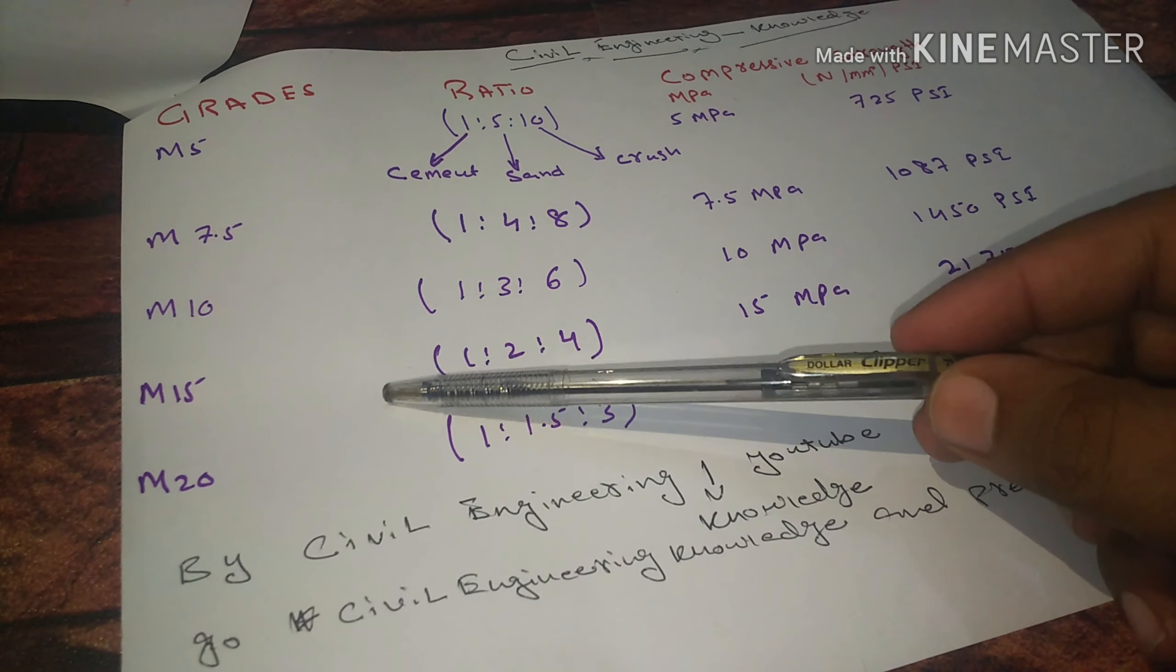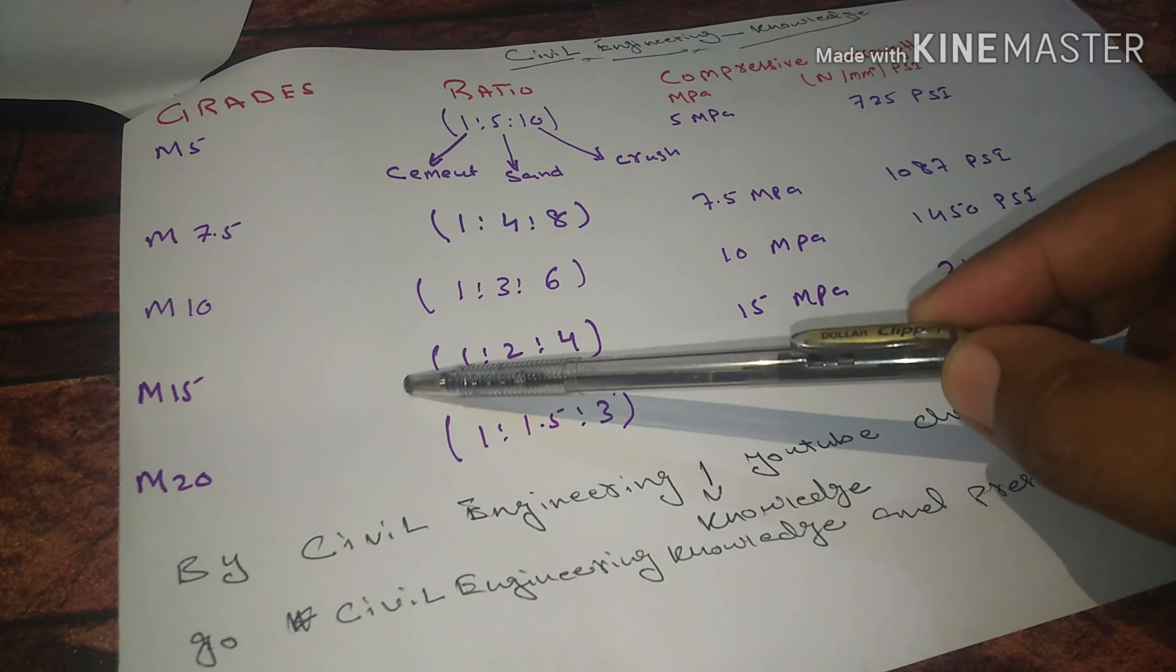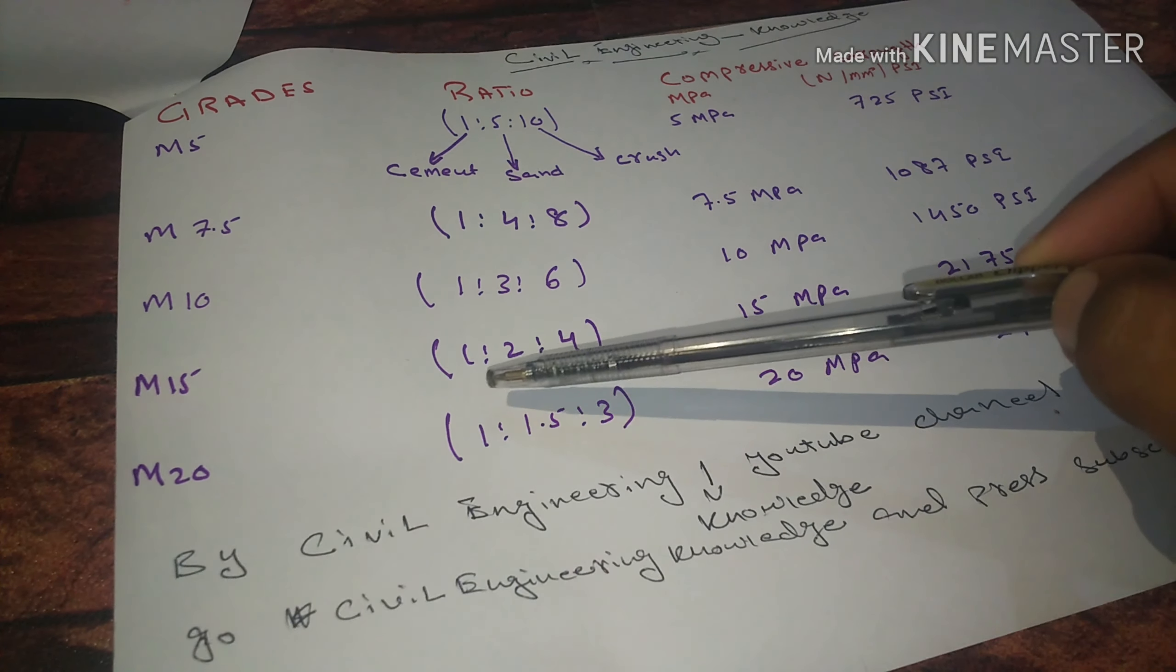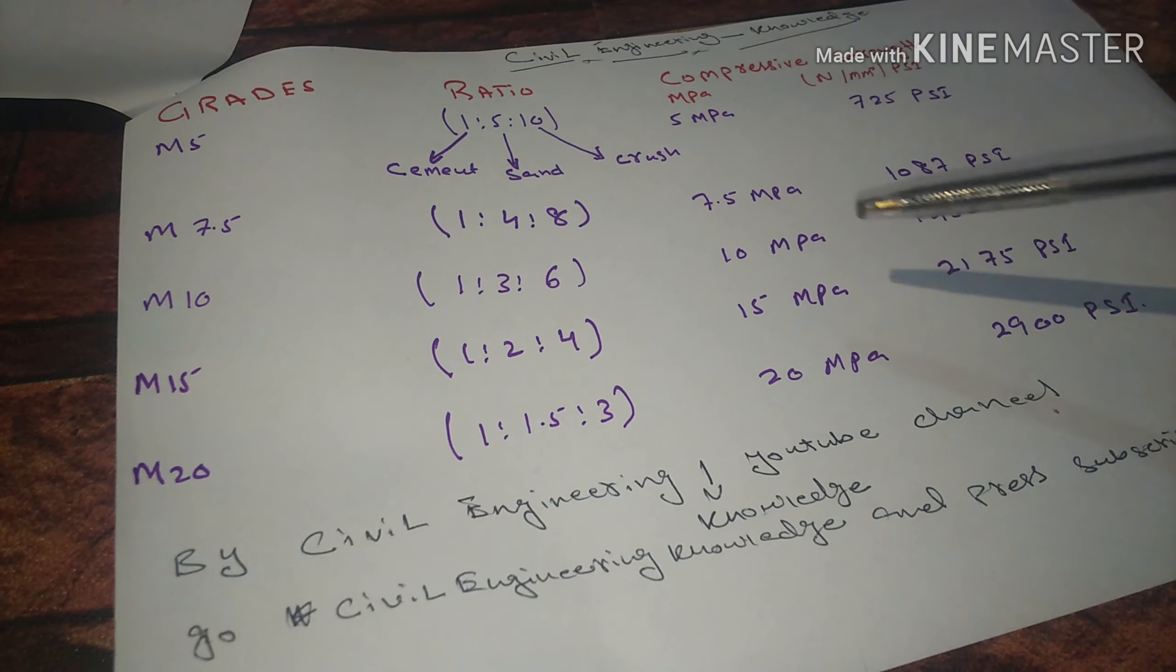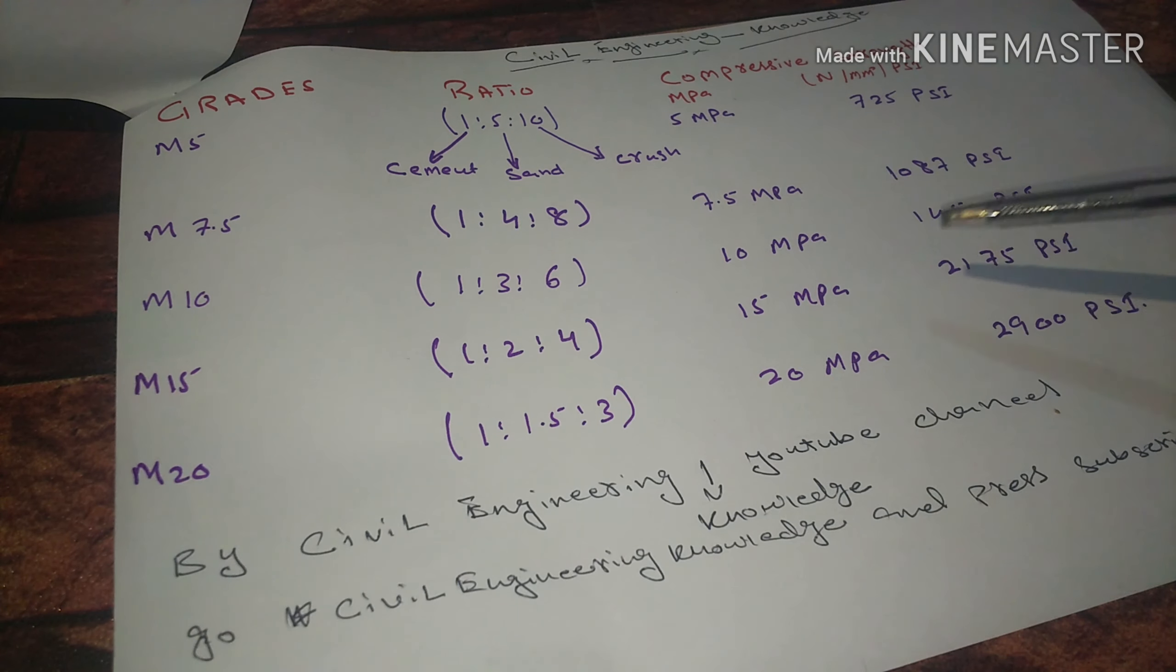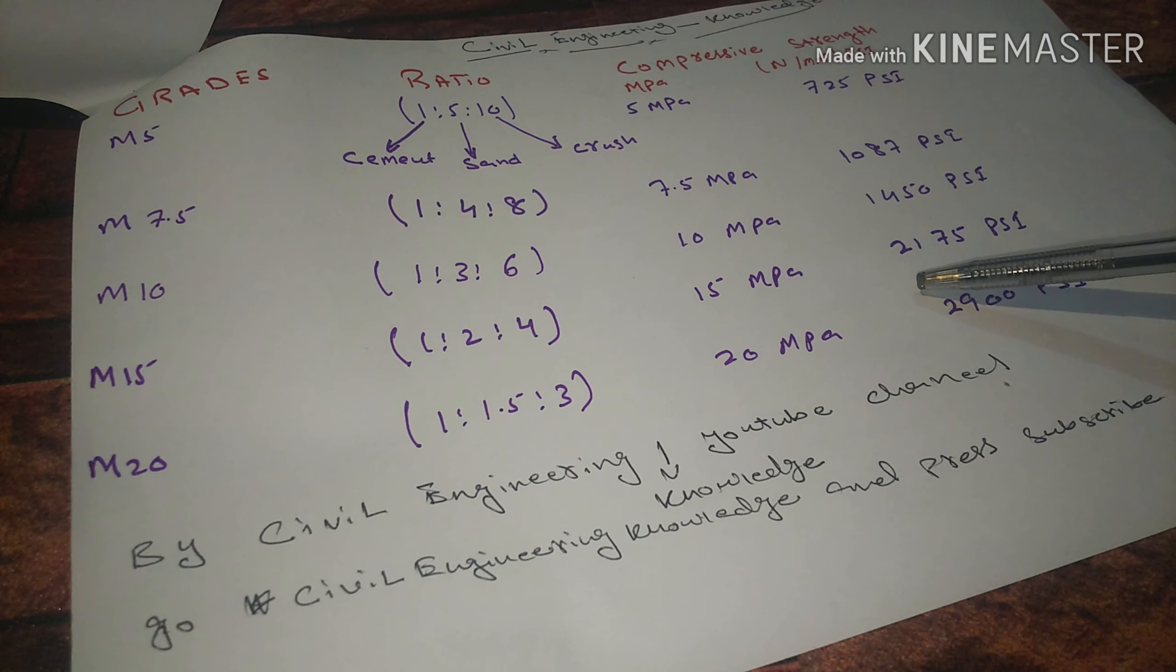Fourth is M15, this is generally commonly used concrete with 1:2:4 ratio - 1 part of cement, 2 parts of sand, and 4 parts of crush. 15 MPa unit and the PSI standard is 2175 PSI.